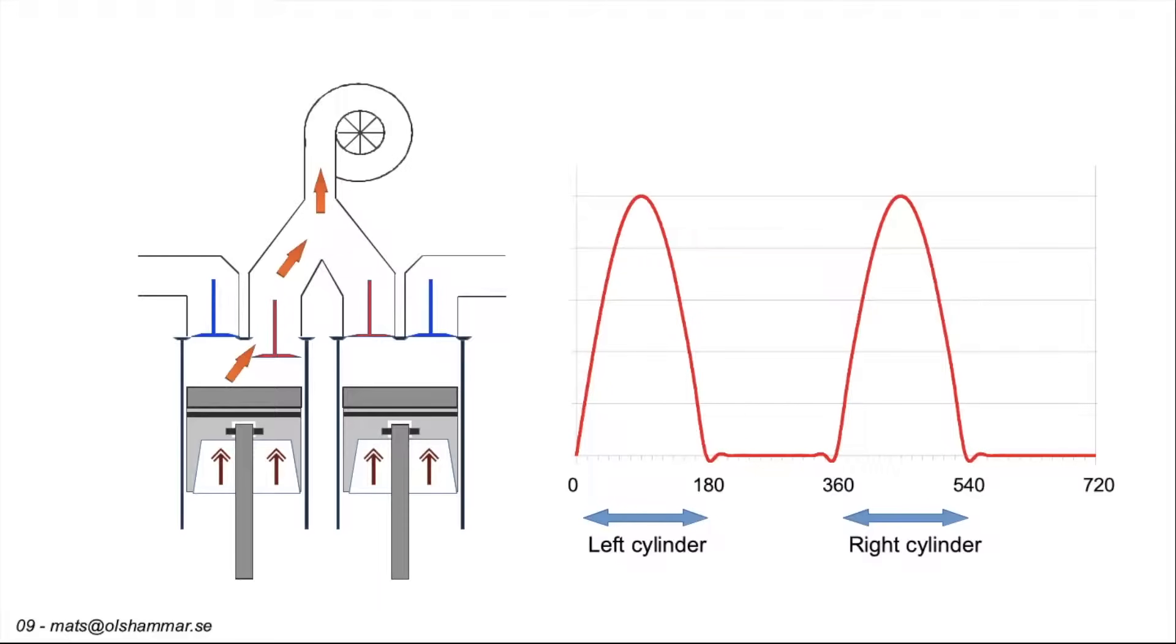You therefore need counterbalances on the crankshaft. The torque is also uneven and you therefore need a heavy flywheel. This adds rotating mass and makes the engine less responsive.